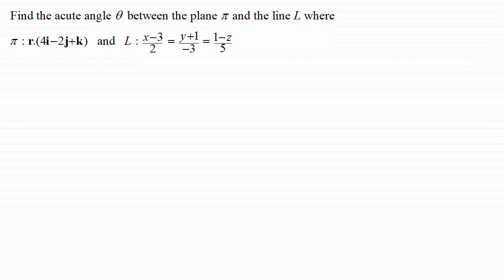Okay, so for this question we've got to find the acute angle theta between the plane π and the line L, where the plane π has the equation r dot (4i - 2j + k). This is in scalar product or dot product form. And we've got the Cartesian form for the equation of the line L: (x-3)/2 = (y+1)/(-3) = (1-z)/5.